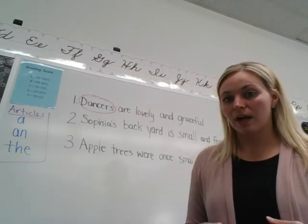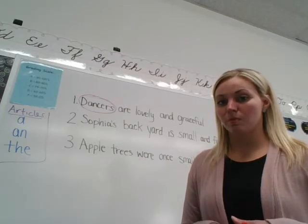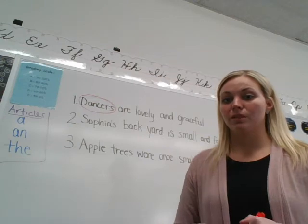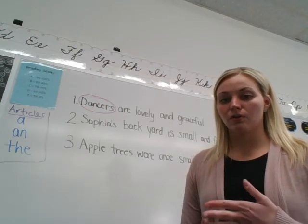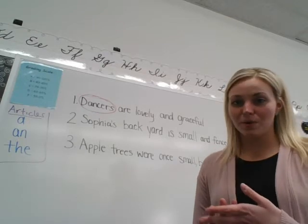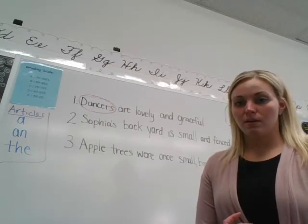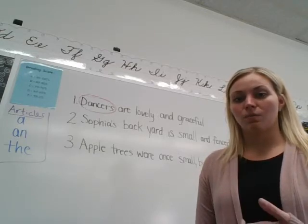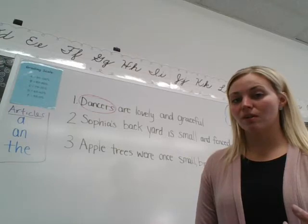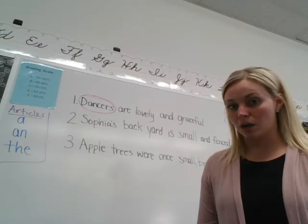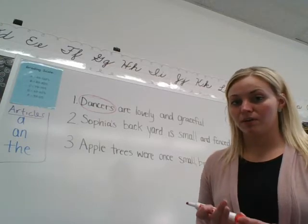Now we need to find our verb. It'd be easier to circle the nouns and then underline the verbs with squiggly lines. Remember, verbs are action words — you can do them. This is where it gets tricky. Remember when I told you that 'is' and 'was' can sometimes be verbs? 'Are' can also sometimes be a verb. You can't really 'do' lovely or graceful, but you are — somebody can be, they are lovely and graceful. So 'are' is actually our tricky verb in this sentence. We're going to make a squiggly line under 'are.'